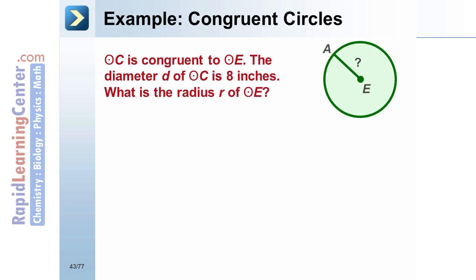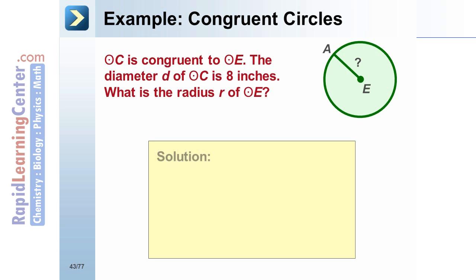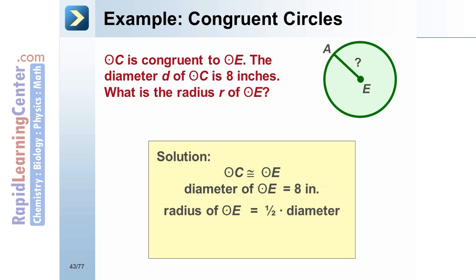The diameter of circle C is eight inches. What is the radius of circle E? Solution: since circle C and circle E are congruent, their corresponding parts are also congruent. Therefore, the diameter of circle E equals eight inches. The radius of circle E is half the length of its diameter. Substituting eight into the equation gives one-half times eight, which simplifies to four inches.